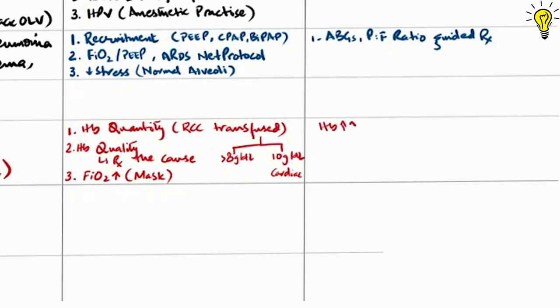On the flip side, over transfusion is also worrisome because it can cause increased viscosity in blood which would reduce the laminar flow through the capillaries and that would compromise oxygen delivery as well. So a balance between conservative and liberal approach has to be established.